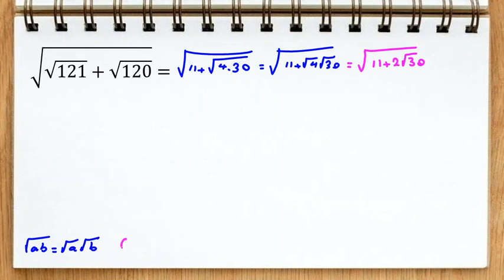Next step, we know that a plus b squared, the famous identity, is a squared plus b squared plus 2ab. Now here, 11 is 5 plus 6, square root of 5 plus 6, plus 2 times square root of 30 is 5 times 6.